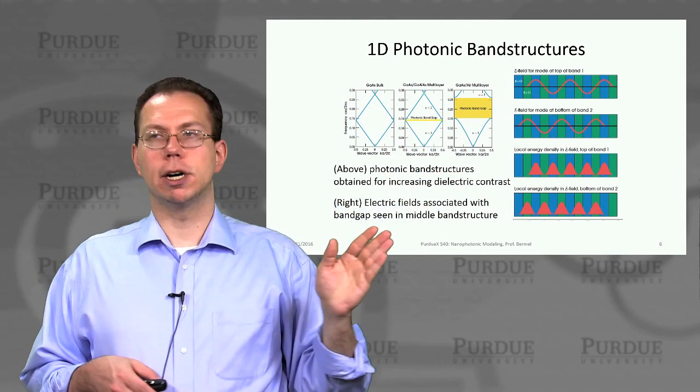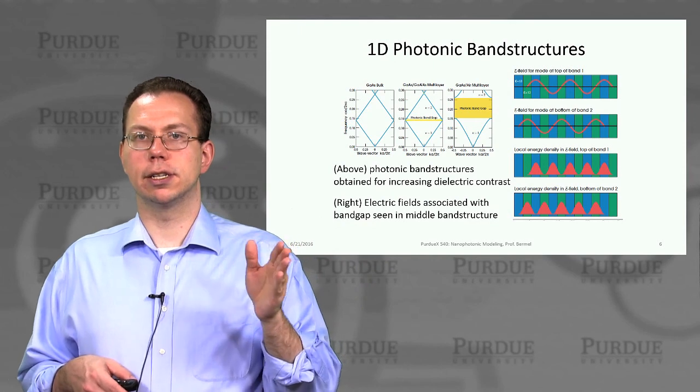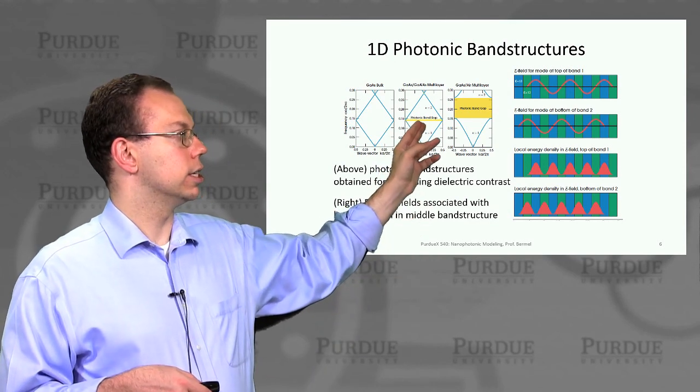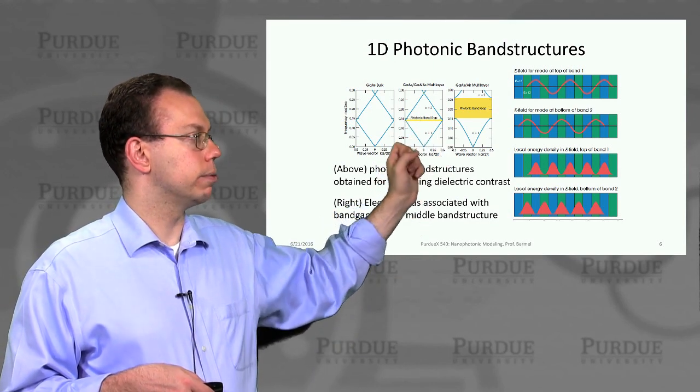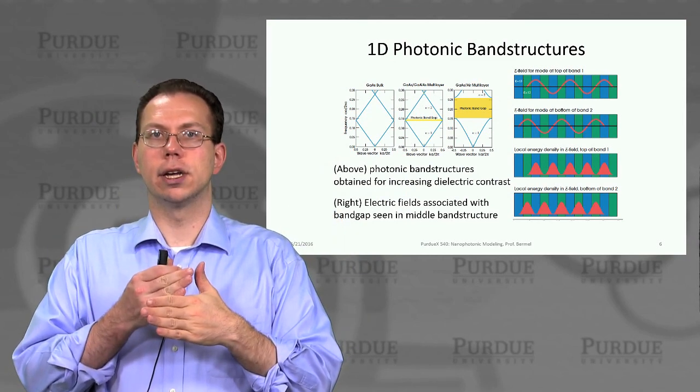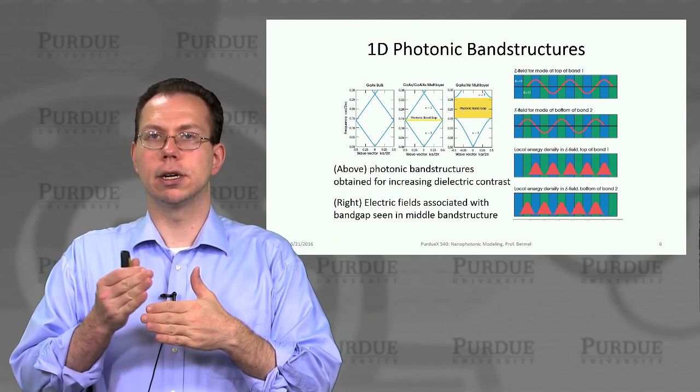But if we introduce a small but non-zero periodicity into the structure, we actually open up a very small band gap. If, for example, you had two materials which had dielectric constants of 12 and 13 alternate.